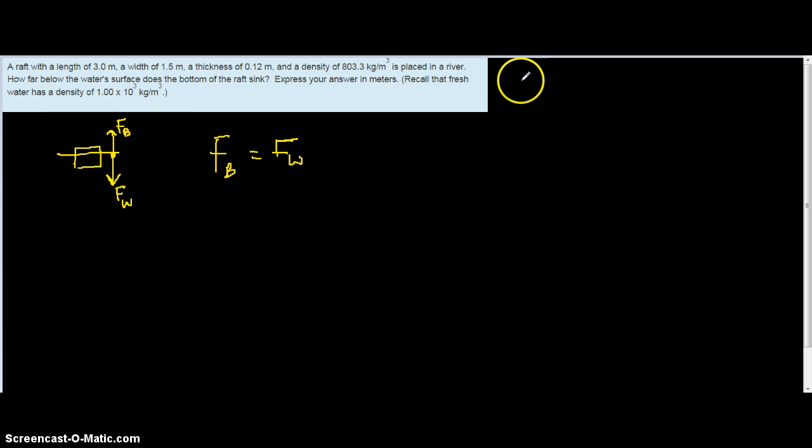I want to draw off to the side here the relationship between density, mass, and volume. Density is mass times volume. We can rewrite mass in terms of density times volume, as I do here. And we're going to have to use that fact to sort of break this thing down for each of these things.